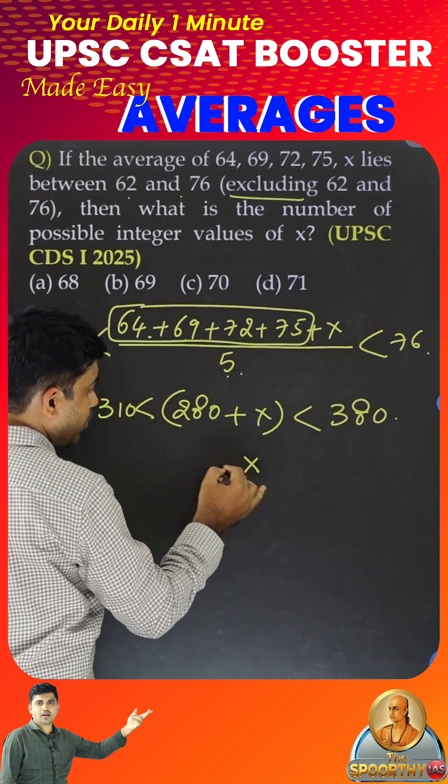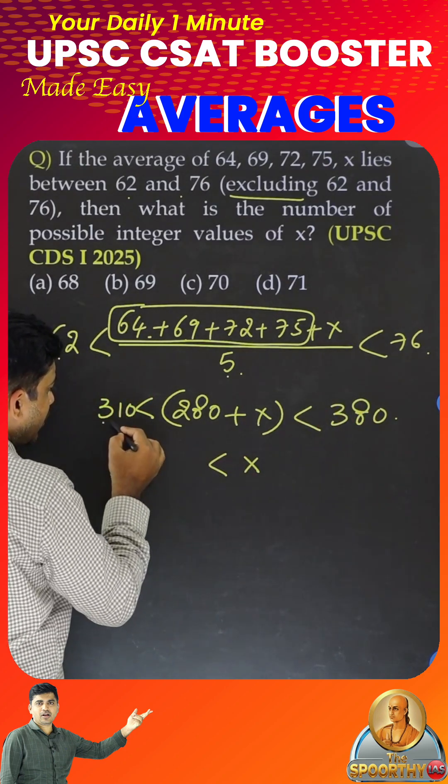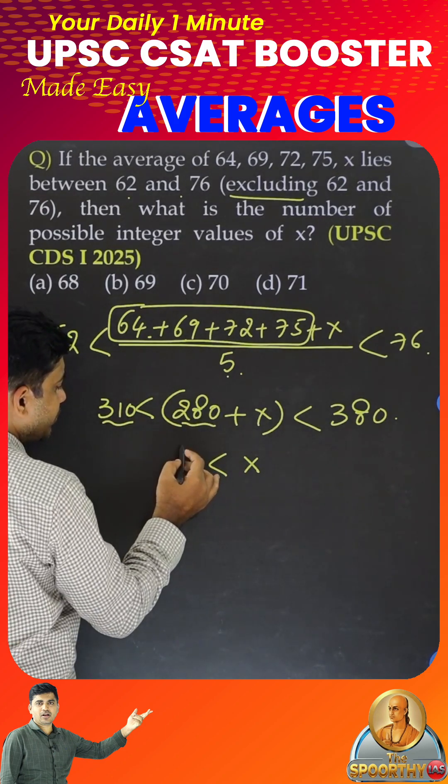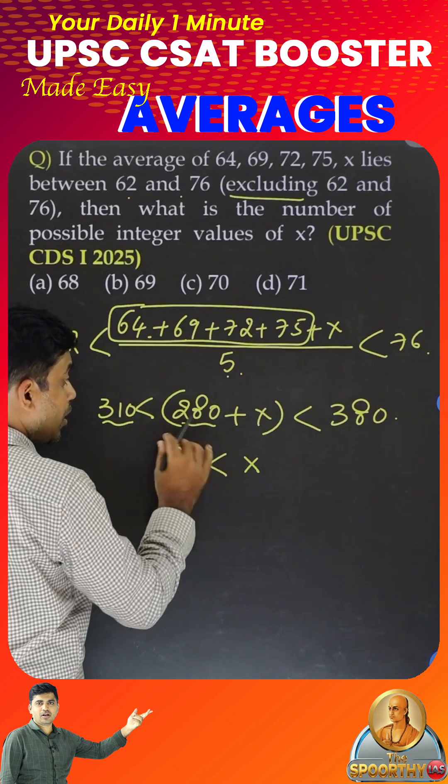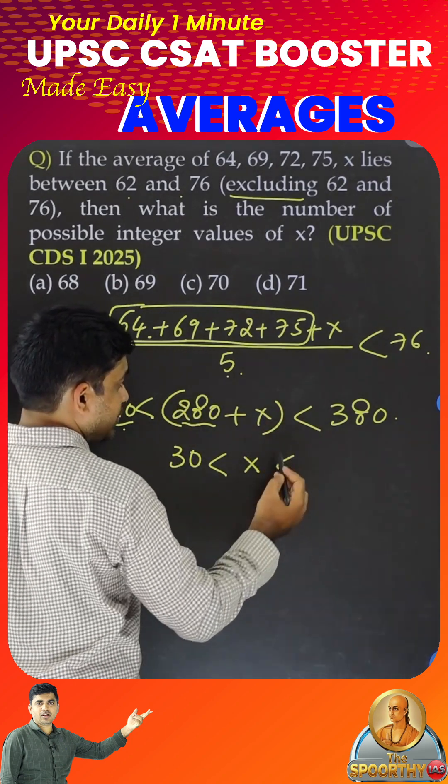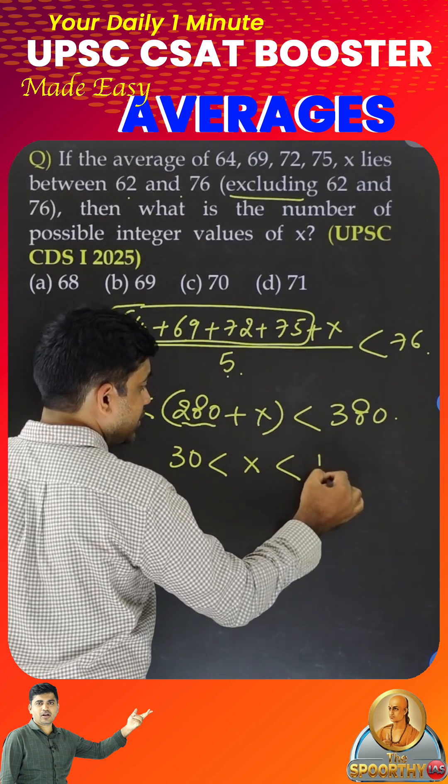Now, X value is greater than 310 minus 280. What is the difference? 30. You send this 280 on both sides.